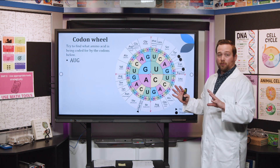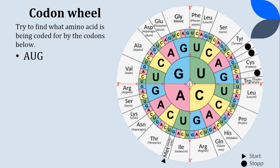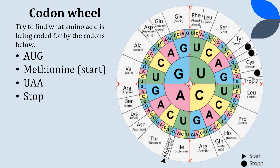Let's try to find the next codon: UAA. Start in the middle and work your way out. If you read this correctly, you'll see that it's landing on a circle labeled stop — this is a stop codon. UAA is a stop codon. Our genes or the mRNA will use a stop codon to stop the building process.